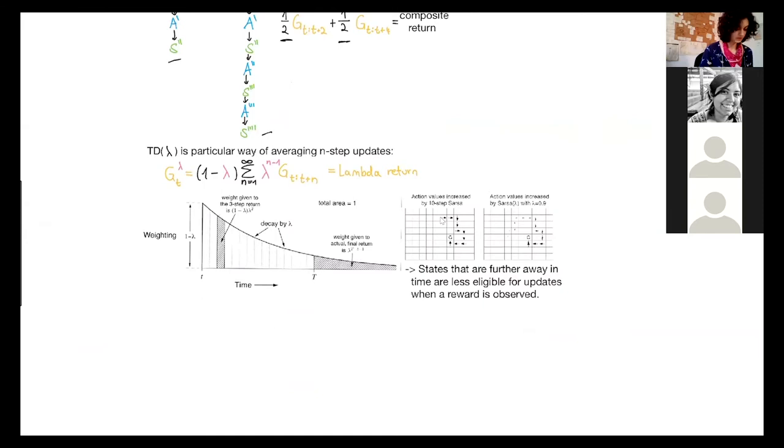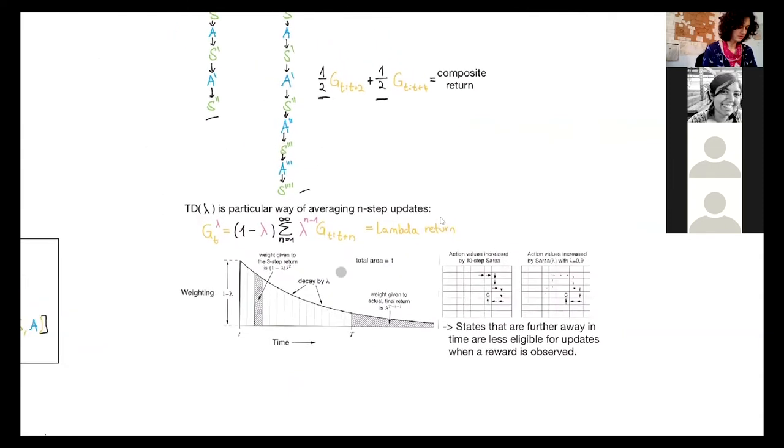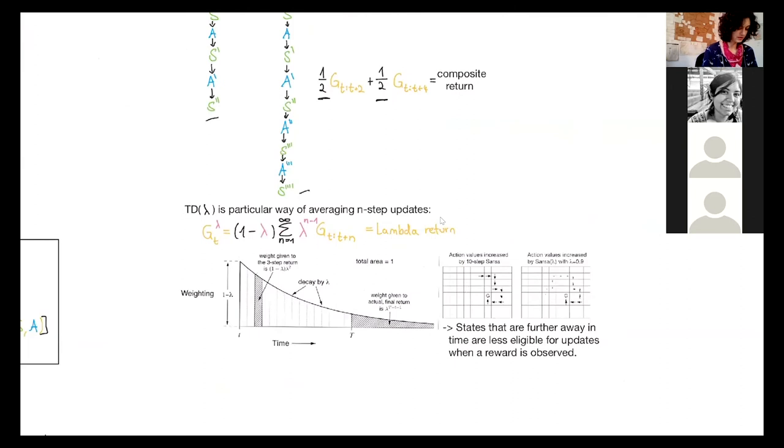This I shouldn't show. So this is actually the next exercise. So we have this lambda factor with which weighs how these different n-step returns are summed up.